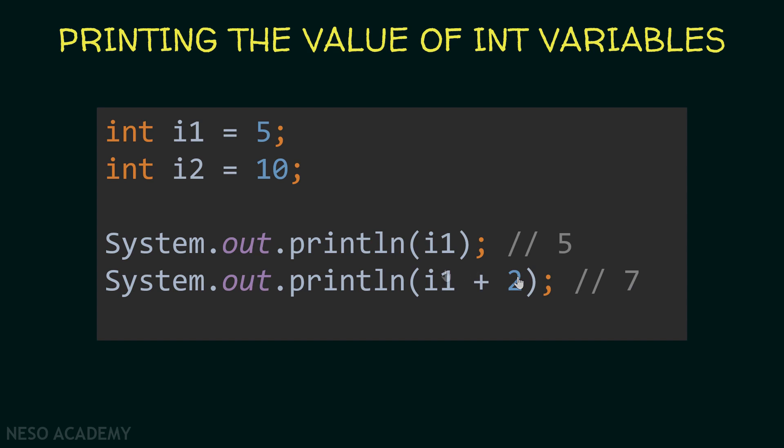Note that over here this is an expression. We will calculate its value and we will print it. We are not adding 2 to i1. So we are not modifying the variable i1. i1 will remain equal to 5. What we are doing over here is that we are taking the value of i1 and we are working with it.